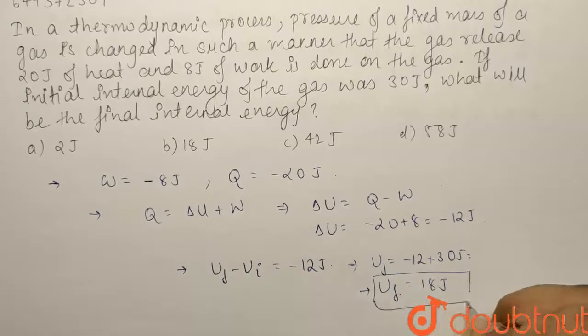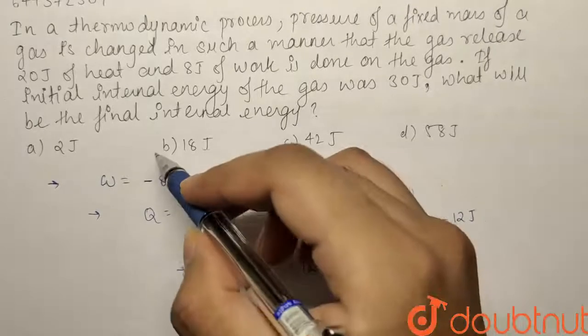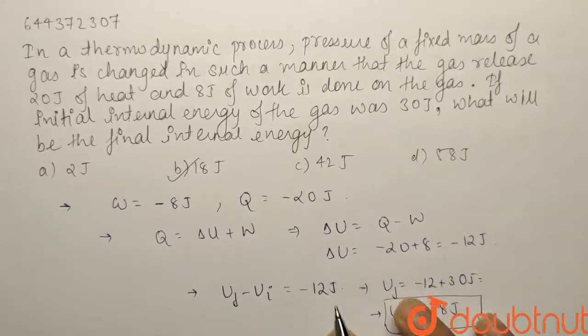The final internal energy of the system is 18 joules, that is our option B. So option B is the right answer. Thank you.